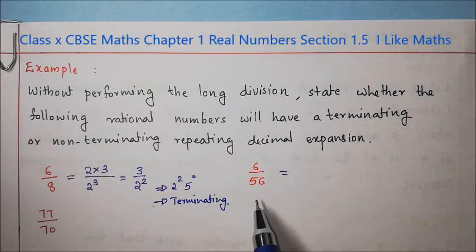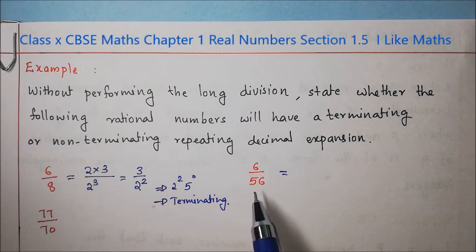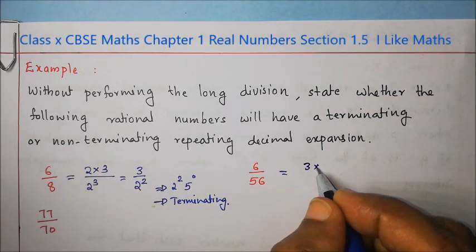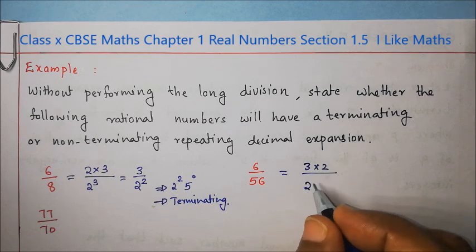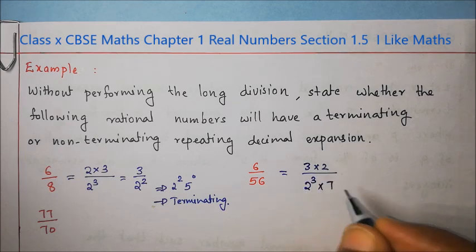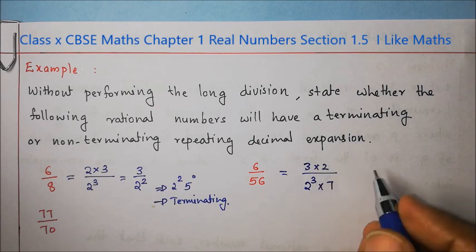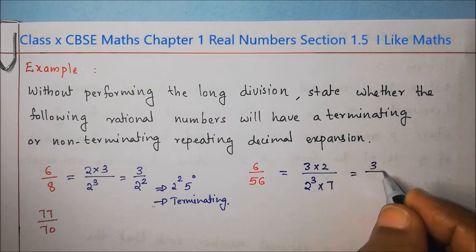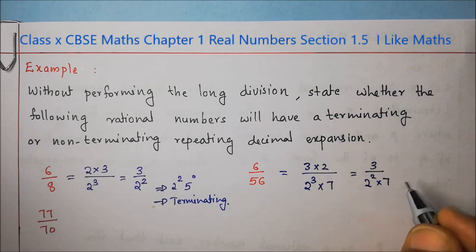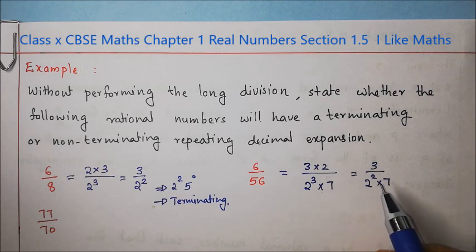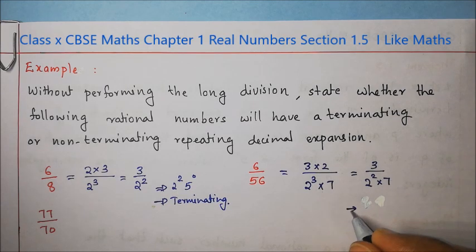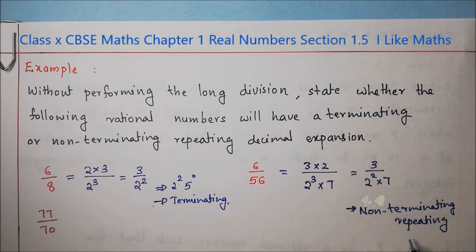Now 6 by 56. Cancel the common factors: 6 = 3 into 2, and 56 = 8 into 7 = 2 to the power 3 into 7. Cancelling the common factor 2, we get 3 by 2 to the power 2 into 7. Here we have 2 but instead of 5 we have 7, so this is not in the form of 2 to the power n into 5 to the power m. Therefore, this will have a non-terminating repeating decimal expansion.